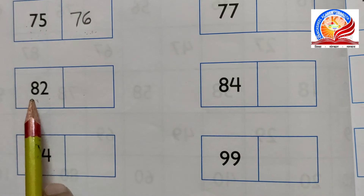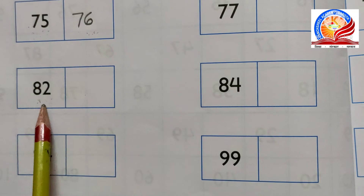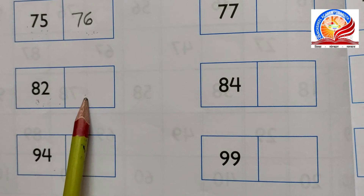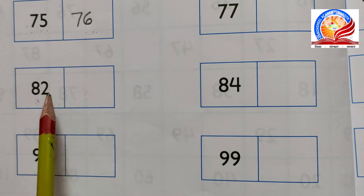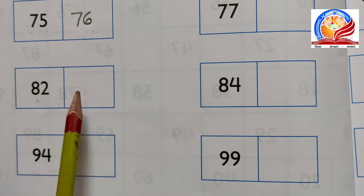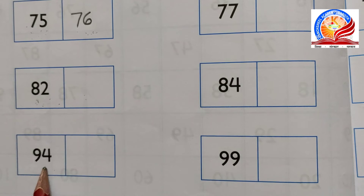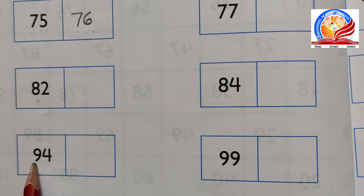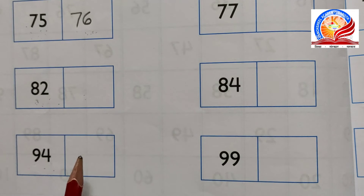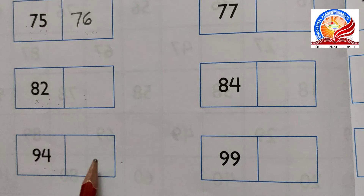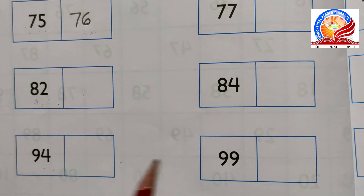Which number comes just after 82? After 82, which number comes after? 83. Which number comes just after 94? After 94, which number will we fill up here? 9, 5 - 95.